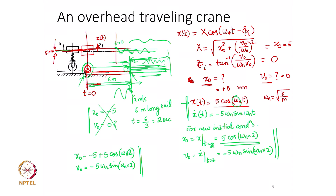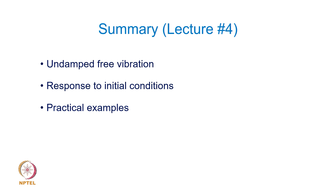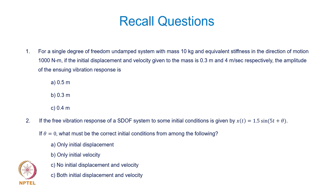In summary, Lecture 4 discussed undamped free vibration response to initial disturbance — specifically initial displacement and initial velocity imparted to a single-degree-of-freedom system at t = 0. Practical examples were taken based on these concepts. These are the recall questions that you should attempt; they are simple and straightforward. Review your answers by looking at the answers given in the next slide.